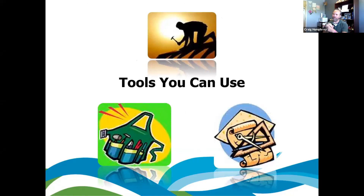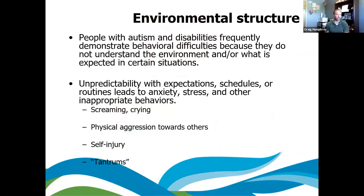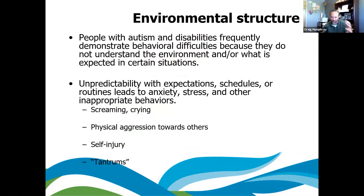This is the last big section — tools you can use and concerns. A lot of times, people with autism and disabilities have behavior challenges because they may not understand the environment. Unpredictable expectations, schedules, and changes in schedules can lead to anxiety, stress, and other inappropriate behavior — screaming, crying, tantrums, and so forth. If you put yourself in that situation: imagine if you came home from work and didn't know your schedule — do I work tomorrow? When do I eat dinner? I live and die by my schedule. If you were always on edge not knowing what was going on, you'd be anxious, unsure of routines, more prone to wander.